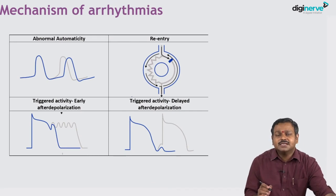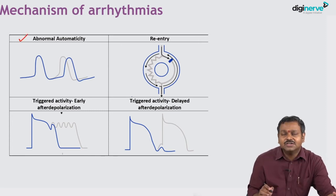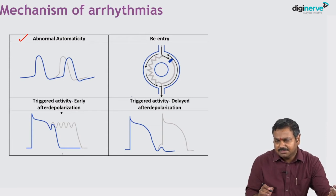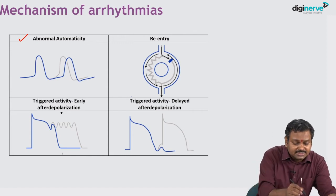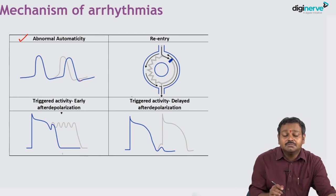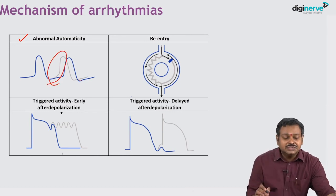Why do arrhythmias occur? There are four basic mechanisms. The first is abnormal automaticity — where automatically a part of the heart, maybe the SA node or other cells, starts triggering. Where the impulse was supposed to come normally, it comes a little earlier. That is what we call abnormal automaticity.